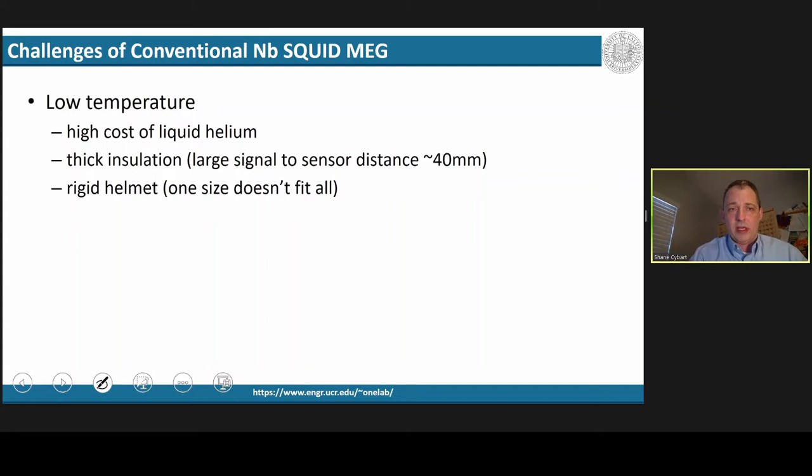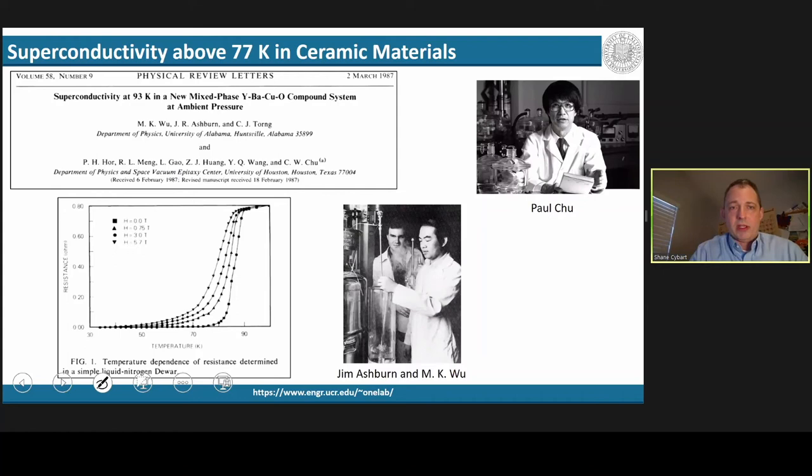Innovation was made in superconducting materials in the late 80s by a group led by Paul Chu and M.K. Wu, when they discovered superconductivity above 77 Kelvin in ceramic materials. People thought that these would replace all of the low temperature SQUIDs, but they haven't. Even today, all the MEG systems use niobium still.